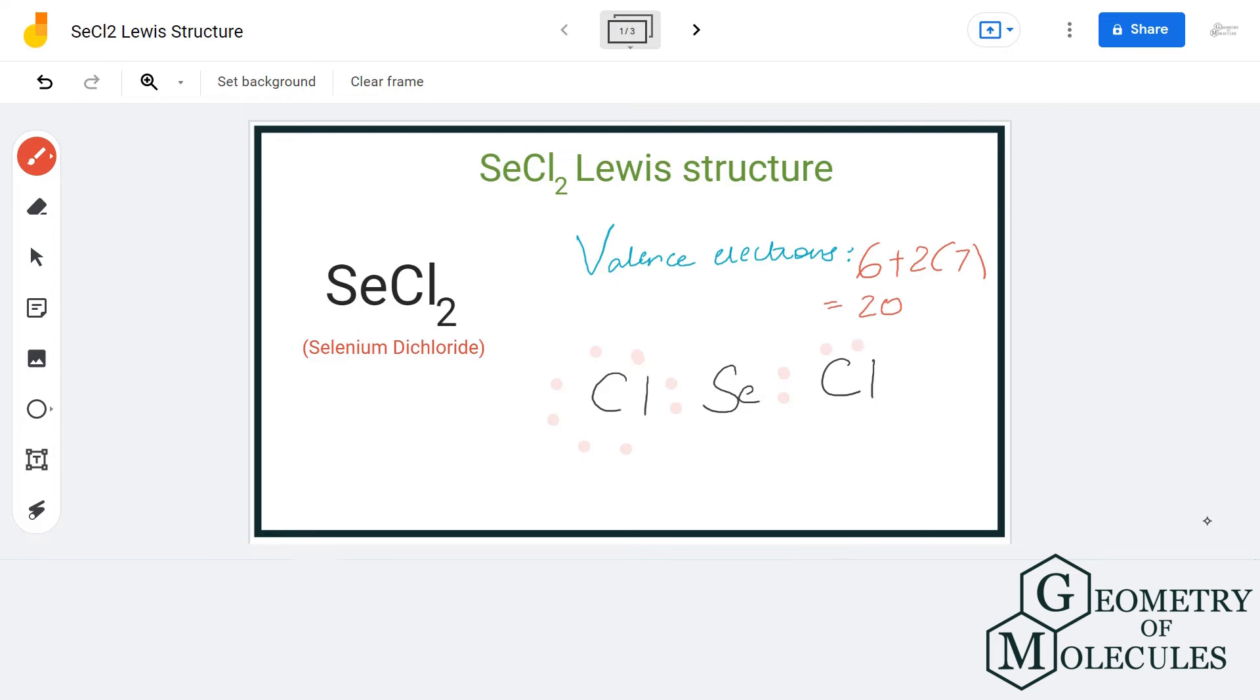The remaining 4 valence electrons will be placed on the selenium atom, and this way we will be using up all our 20 valence electrons. This is the Lewis structure of SeCl2 in which selenium atom forms a single bond with both chlorine atoms.